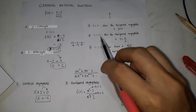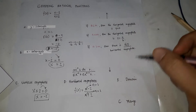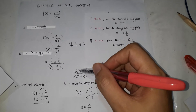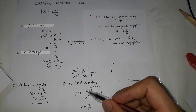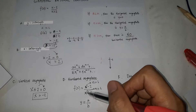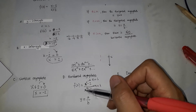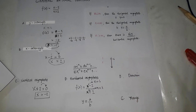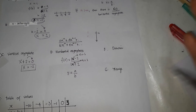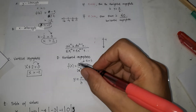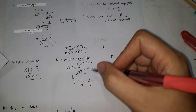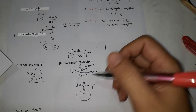Since n is equal to m, according to our rule, the horizontal asymptote is y equals a over b. Here a is the coefficient of x in the numerator — which is 1 (implied) — and b is the coefficient of x in the denominator, also 1. So y equals 1 over 1, which equals 1. That's our horizontal asymptote.